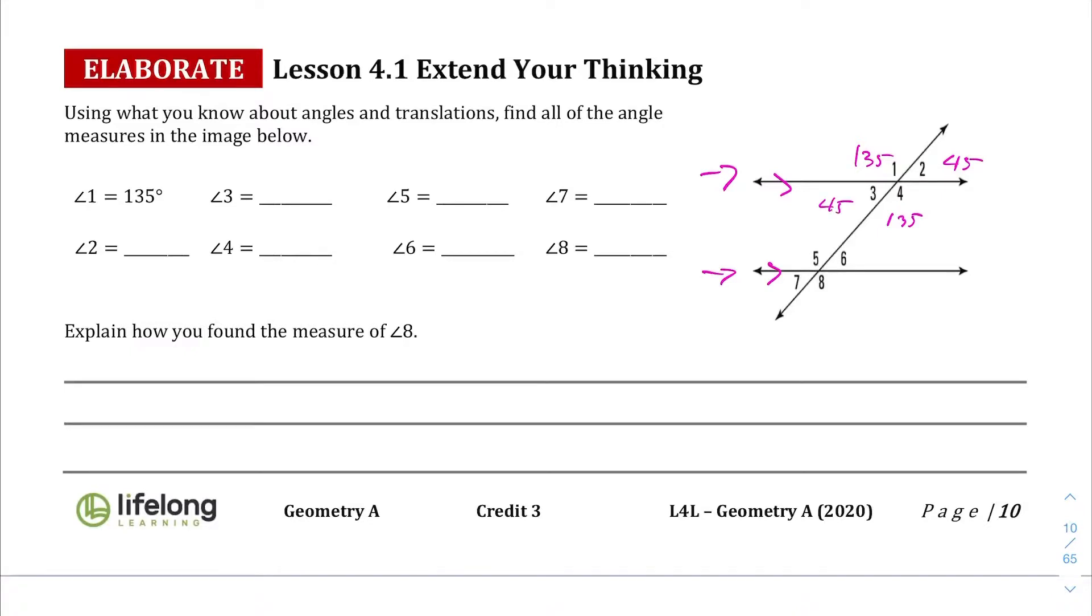What you can find is that angle 1 is 135 degrees, angle 3 is 45 degrees, angle 2 is also 45 degrees, and angle 4 is 135 degrees. But unfortunately, folks, we just don't have enough information for angles 5, 6, 7, and 8, and by that measure, how to find the measure of angle 8 with the information that we're given.